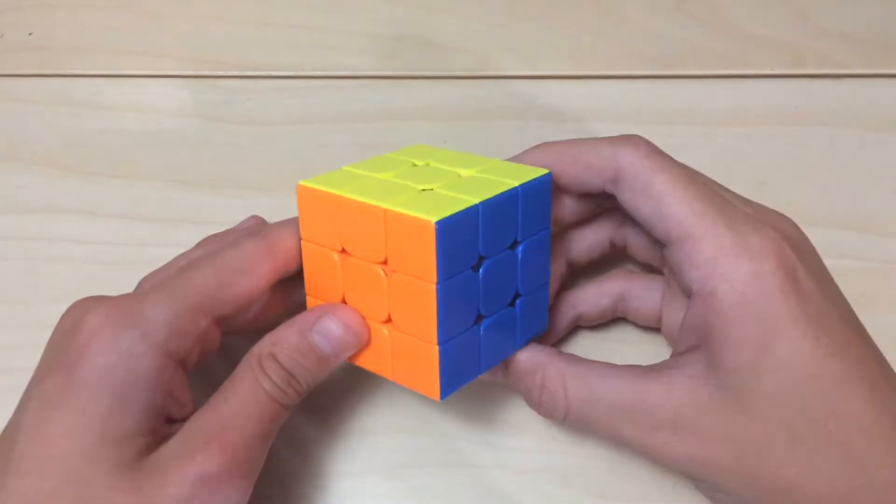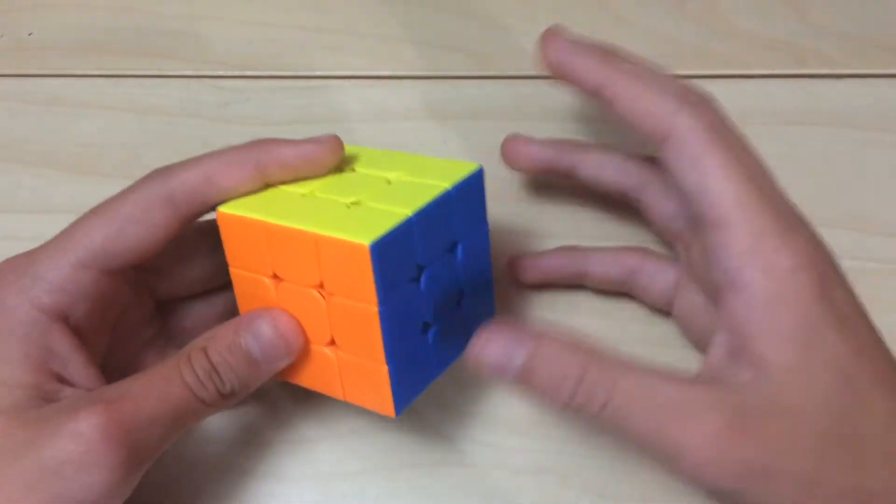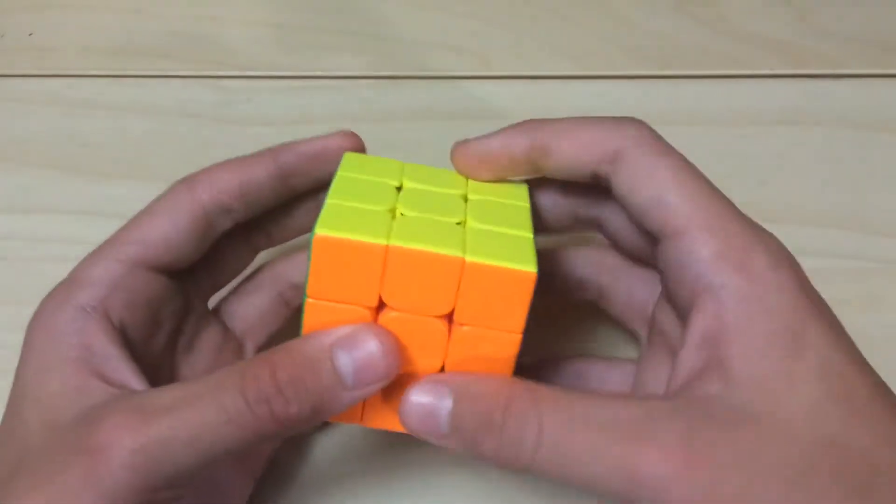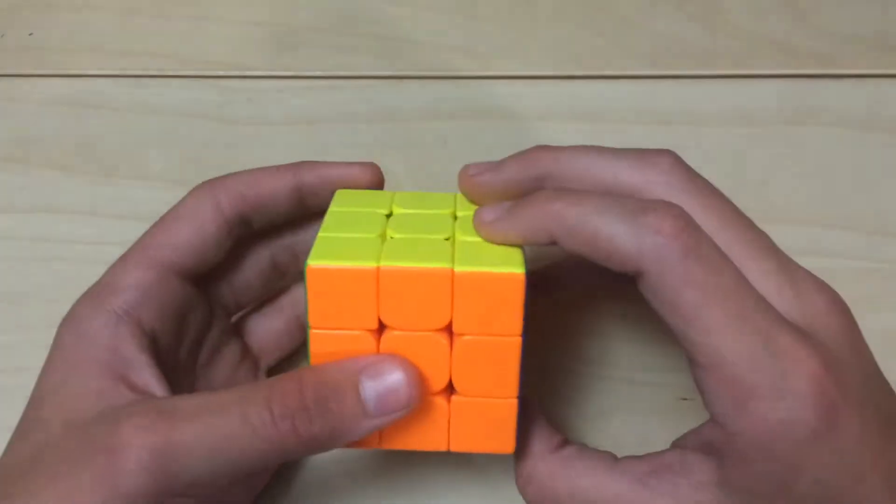There are two things that finger trick notation communicates. Each of them is communicated differently. One is the actual finger tricks, and the other is re-grips and how you're holding the cube when you do those finger tricks.